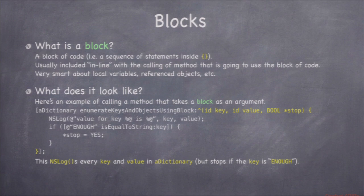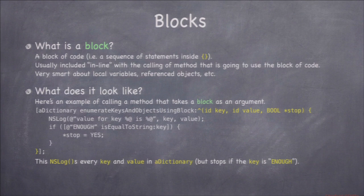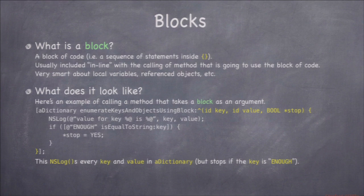When you call enumerateKeysAndObjectsUsingBlock, the dictionary executes that block of code repeatedly for every key and value, until you set star-stop to YES or until it runs out. The code is embedded right inside the message call — the open square bracket and close square bracket surround it. In computer science generally, we call this a closure. Blocks in Objective-C always start with the caret character. Then there might be a return type, possibly some arguments, and then a curly brace with the code.